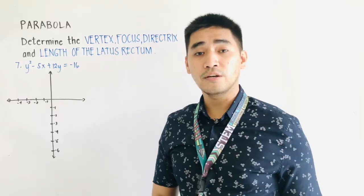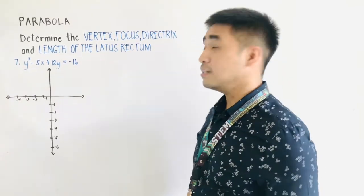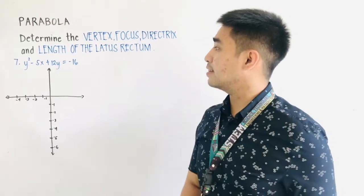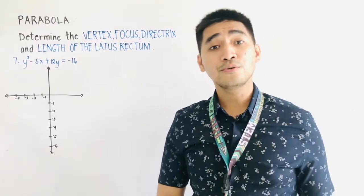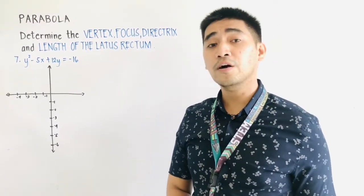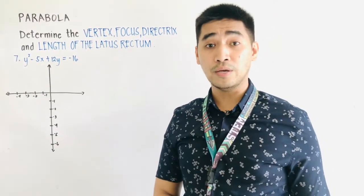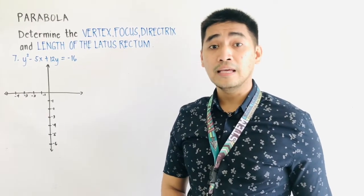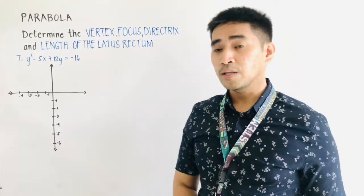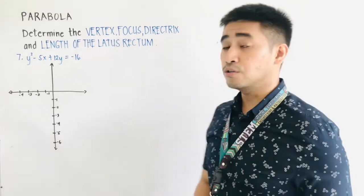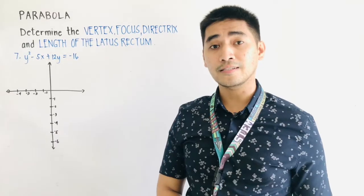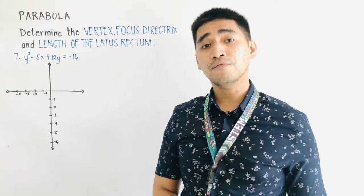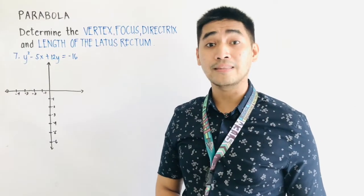For today's video, we will be able to determine the vertex, the focus, the directrix, and the length of the latus rectum using an equation. When we are dealing with equations, all we have to do is remember what we have done in the equations of the circle. In order for us to find these properties given an equation, the first thing we need to do is to complete the square.